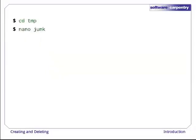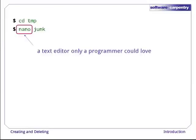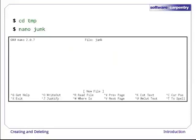Let's change our working directory to temp using cd, then run the command nano junk. Nano is a very simple text editor that only a programmer could really love. We really do mean text — it can only work with plain character data, not tables, images, or any other human-friendly media. This is what nano looks like when it runs. The cursor is the blinking square in the upper left, showing us where what we type will be inserted.